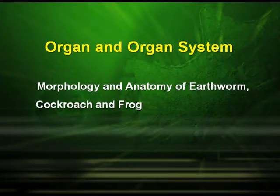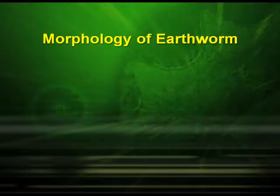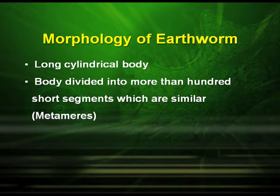We will be discussing regarding the morphology and anatomy of earthworm, cockroach, and frog. There is a distinct difference between morphology — the study of the external structure of the organisms — and anatomy — the internal structure of the organisms. Regarding the morphology of earthworm, they have a long cylindrical body and the body is divided into more than 100 short similar segments which are known as the metameres.